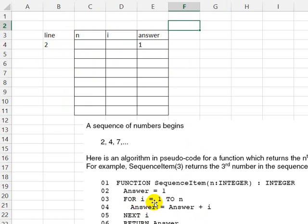In line 3, the start of the for loop, I is set equal to 1.